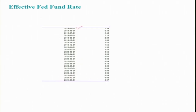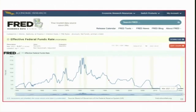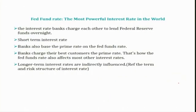Here is more data on the effective Fed fund rate. For example, in 2019 the rate was higher, but in 2021 the effective Fed fund rate was just 0.07% — that is the rate at which one bank borrows from another.